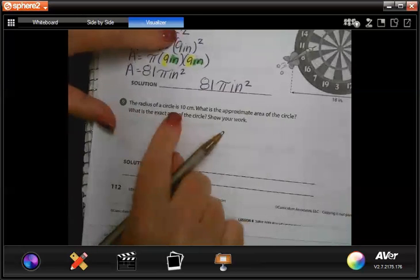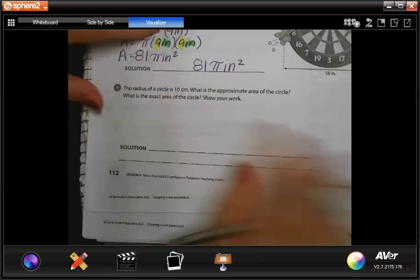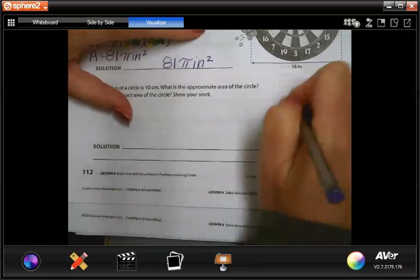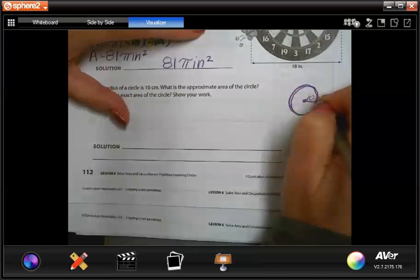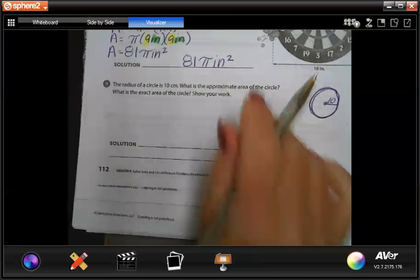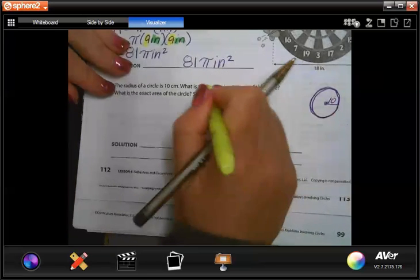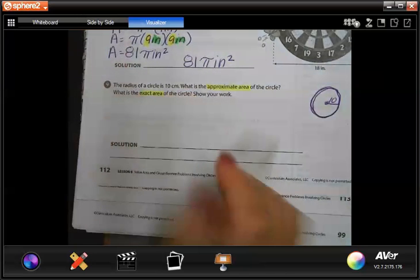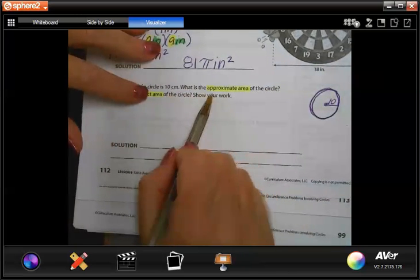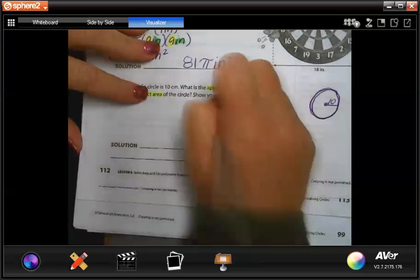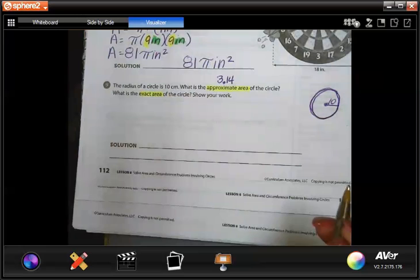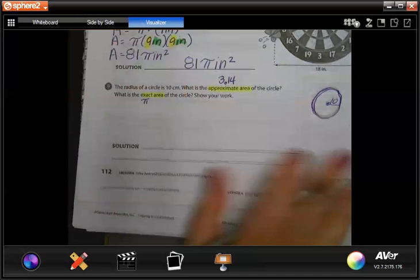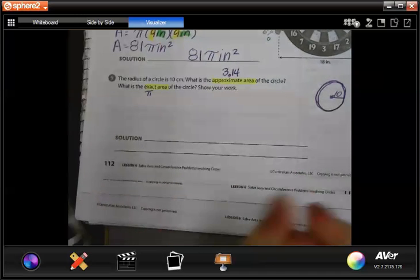The radius of a circle is 10 centimeters. I don't know about you guys, but I have to draw this out. So here's my circle, here's my radius, and it's 10. What is the, ooh, look at this. We have to find the approximate area and the exact area. Remember, when we do approximate, we're gonna substitute in 3.14 in for this. The exact is when we use pi. So we're gonna do both of those right now.